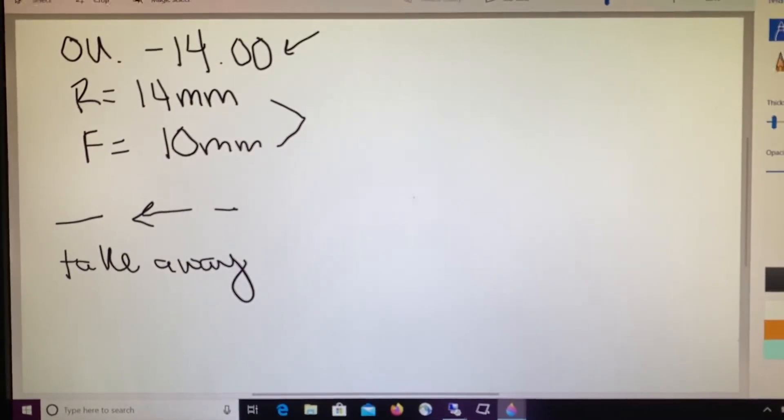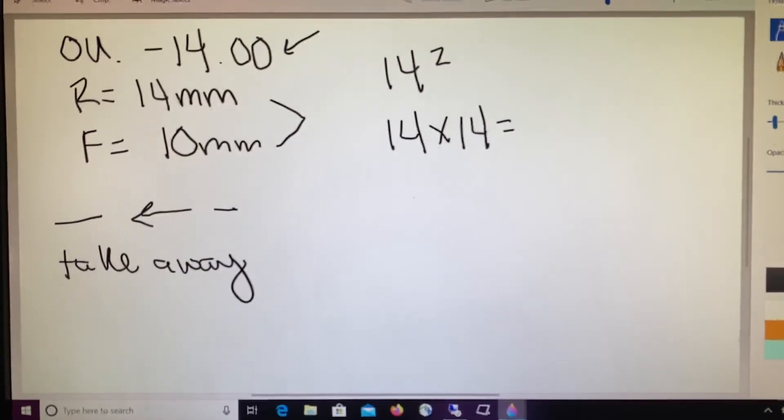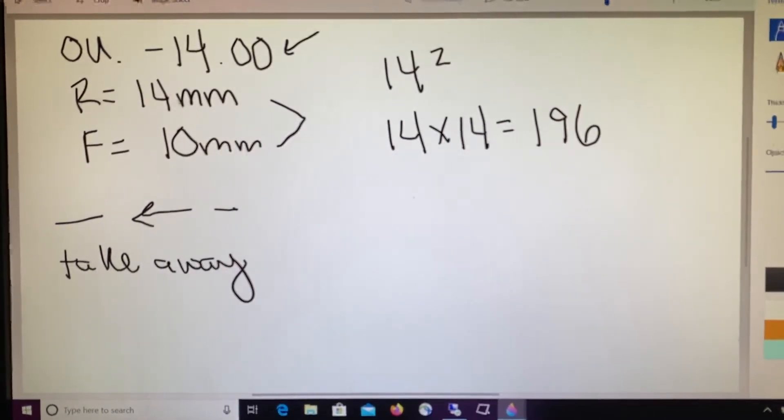The equation says that we take the power and we square it, which means we're going to take 14 times itself, or 14 times 14. When we do that, we end up with 196.